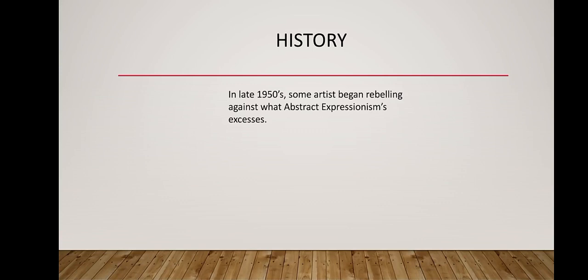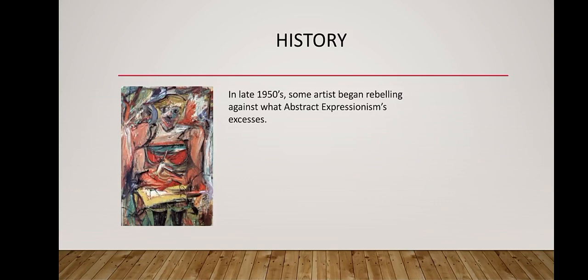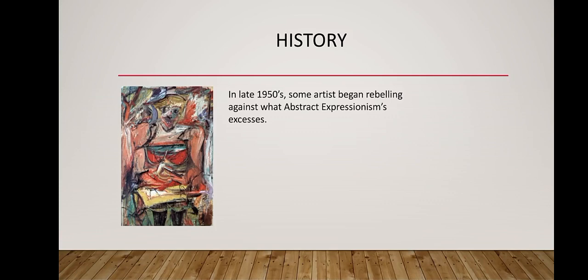How did this become an art movement? In the late 1950s, some artists began rebelling against abstract expressionism's excesses. Look at this de Kooning painting entitled 'Woman Being.' It conveys a deep meaning and strong emotion. You can see it with the thick brush strokes, movement, and colors.